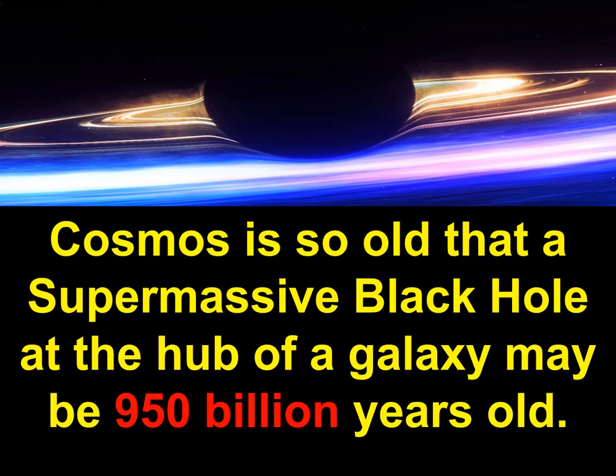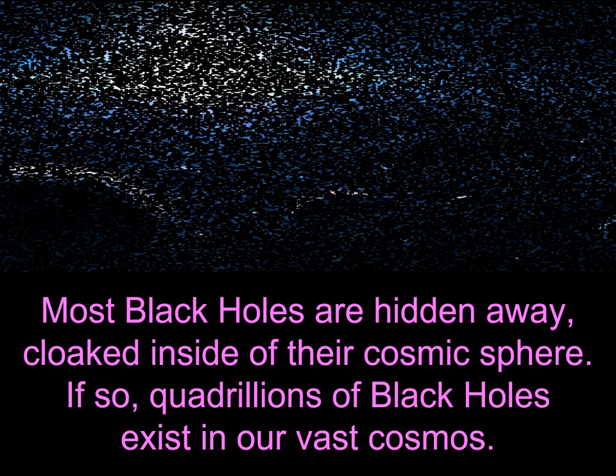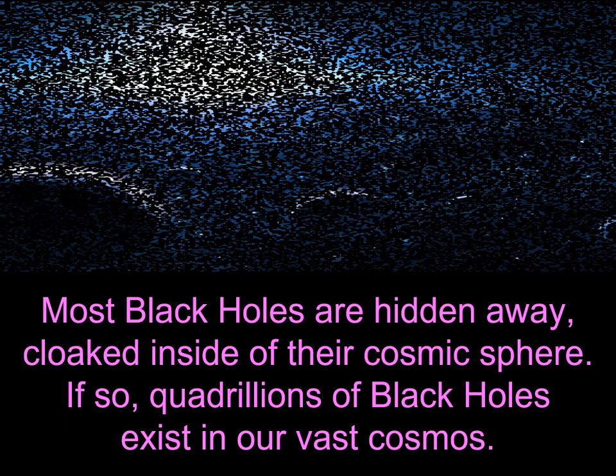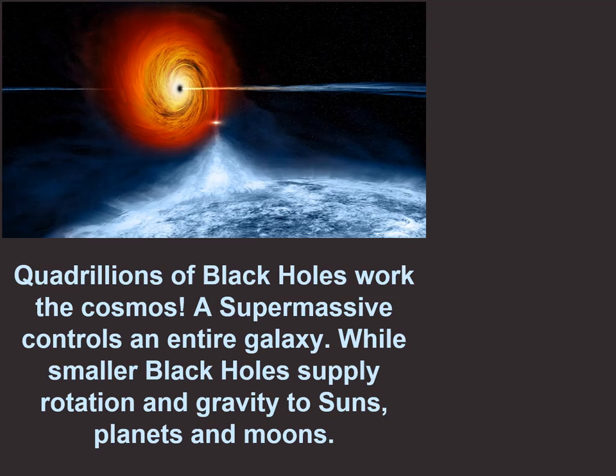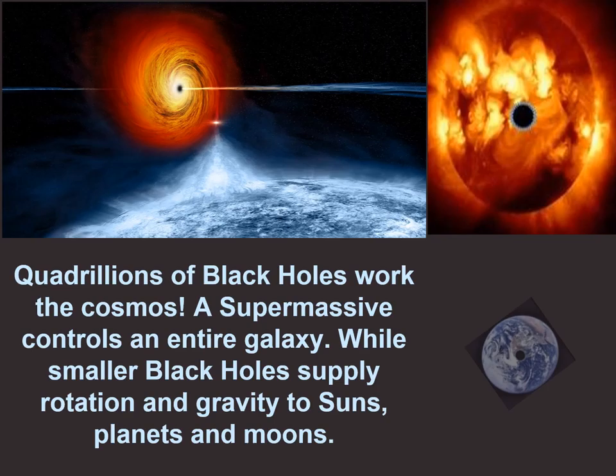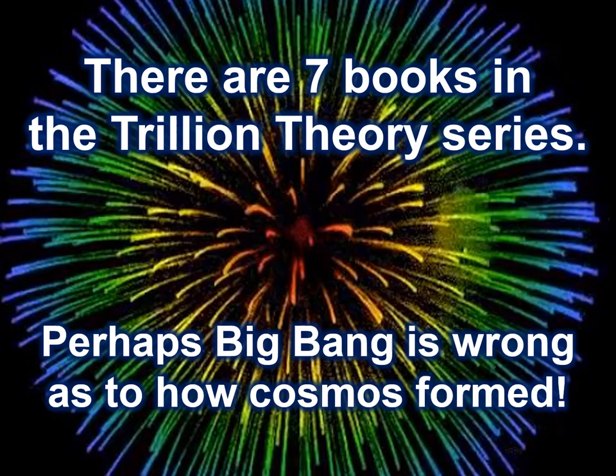Trillion Theory shows that black holes date back to the origin of our universe, a trillion years ago. The cosmos is so old that a supermassive black hole at the hub of a galaxy may be 950 billion years old. Most black holes are hidden away, cloaked inside their cosmic sphere. If so, quadrillions of black holes exist in our vast cosmos — a supermassive controls an entire galaxy while smaller black holes supply rotation and gravity to suns, planets, and moons.